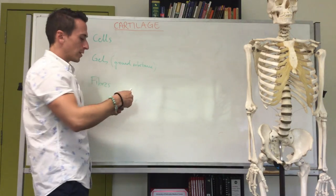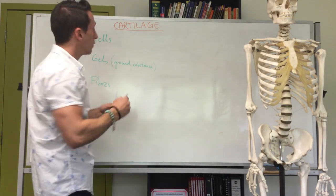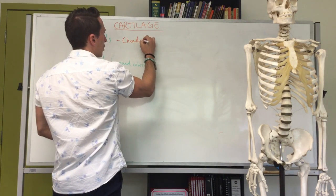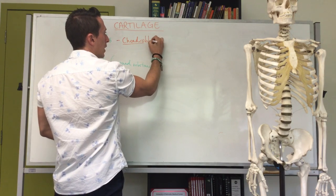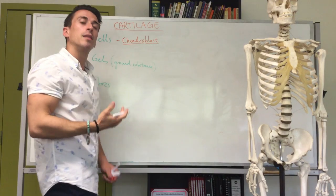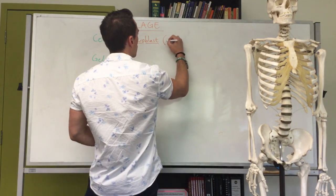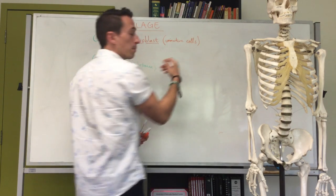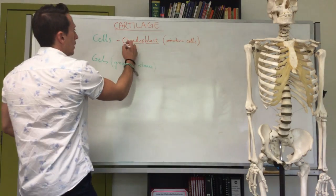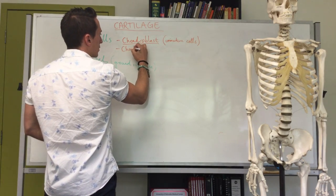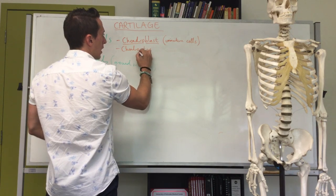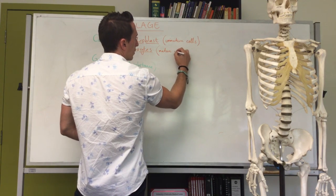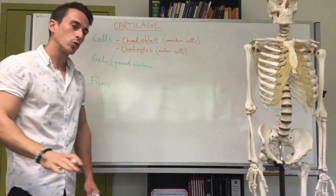Today we're talking about cartilage, so we need to discuss the cell types found in it. Cartilage is made up of chondroblasts — 'chondro' meaning cartilage — which are immature cartilage-making cells that make and secrete cartilage. You also have chondrocytes, which are the mature cartilage cells embedded inside the cartilage itself — I'll draw this up shortly.